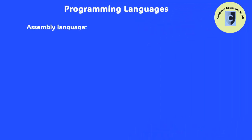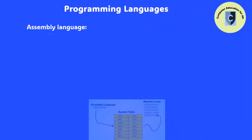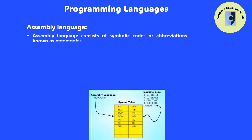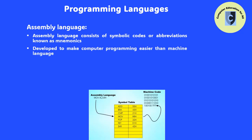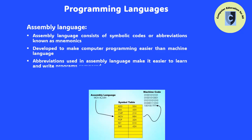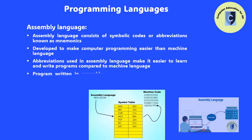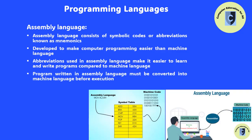Assembly language consists of symbolic codes or abbreviations known as mnemonics. It was developed to make computer programming easier than machine language. The abbreviations used in assembly language make it easier to learn and write programs compared to machine language. A program written in assembly language must be converted into machine language before it is executed by the computer. A program known as an assembler is used to translate assembly language into machine language.